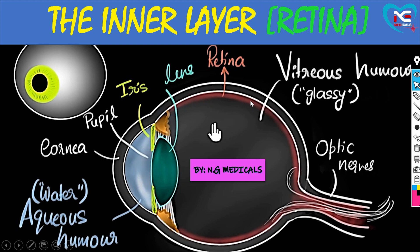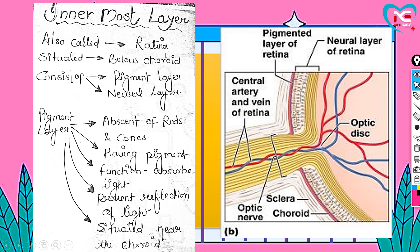Retina is the inner layer. Retina is a single layer which is composed of two separate important thin layers — that is the pigmented layer and the neural layer. So pigmented plus neural layer is equal to the retina layer.